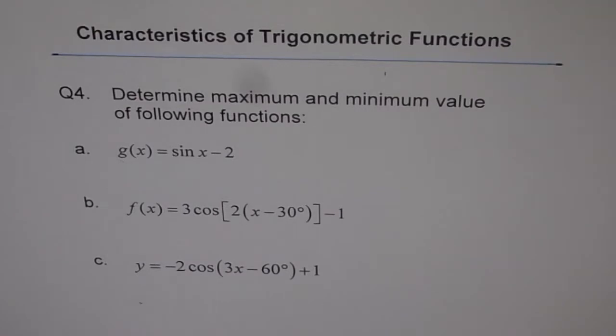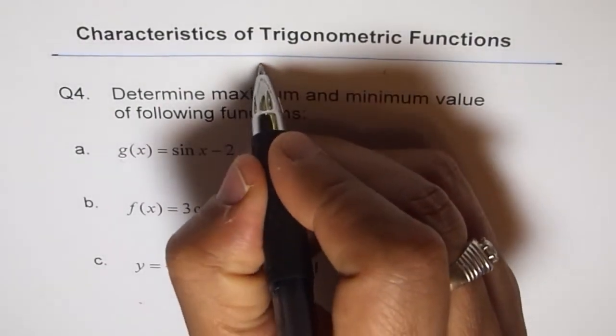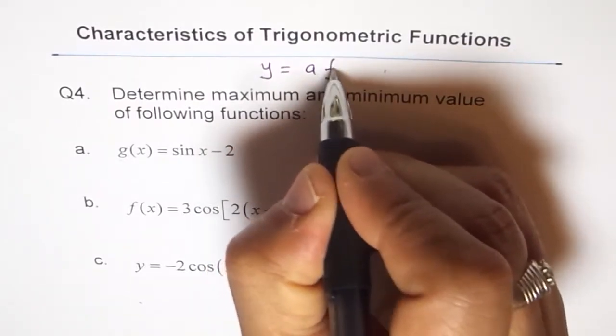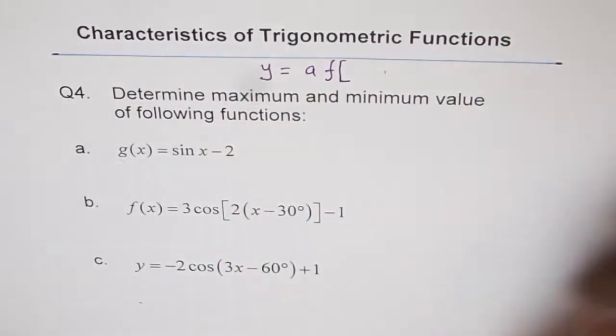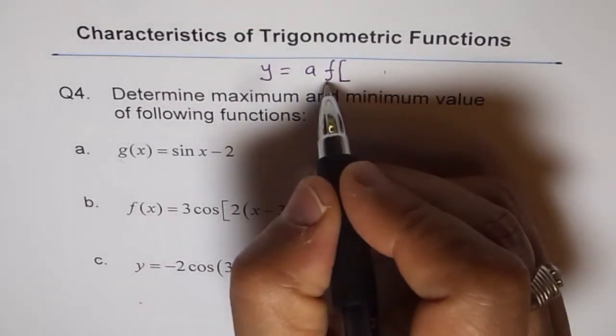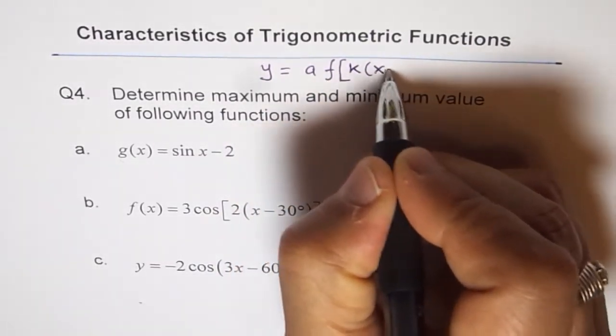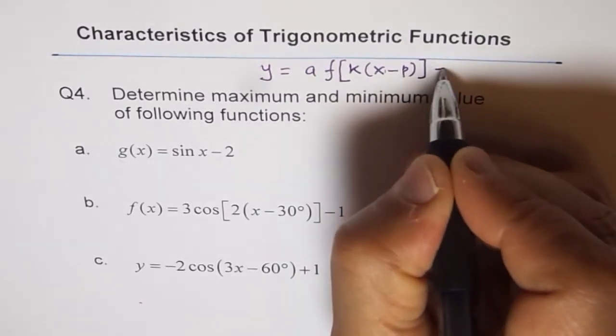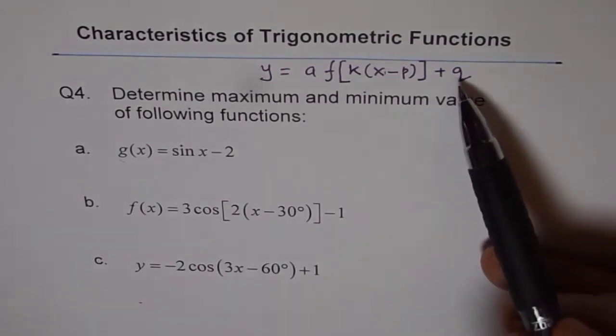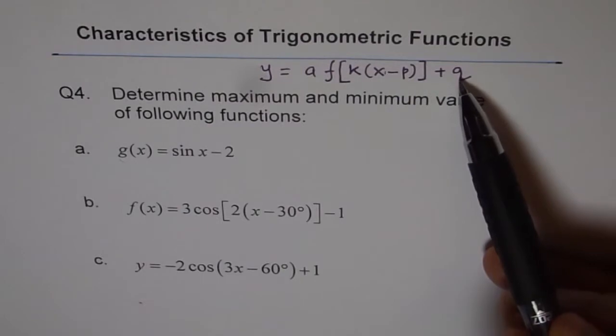In general we will write a transformed equation like this: y equals a times f of k times x minus p plus q. The function could be sine, cosine, or any function. Books sometimes will write d here and c here, so p I am writing for phase shift. And q is the vertical translation.